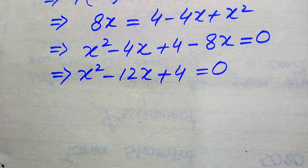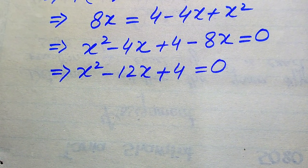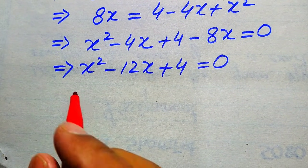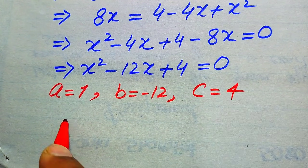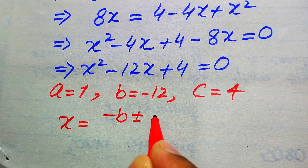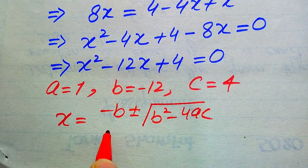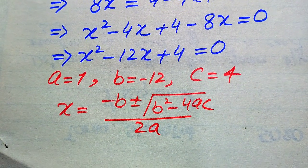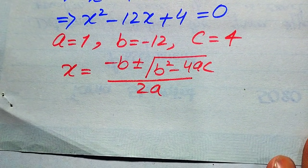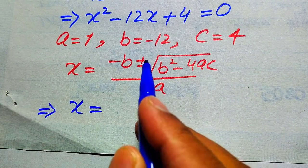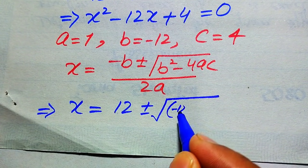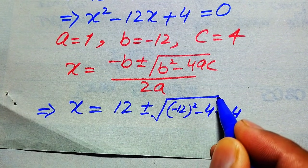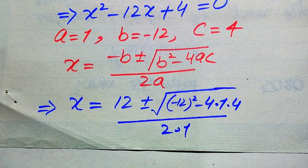Here we use the quadratic formula to solve this problem. We need to write the coefficients of this equation: a equals 1, b equals minus 12, and c equals 4. The quadratic formula is: x equals minus b plus-or-minus square root of b² minus 4ac, divided by 2a. We substitute the values of a, b, and c to get: x equals 12 plus-or-minus square root of (minus 12)² minus 4 times 1 times 4, divided by 2 times 1.